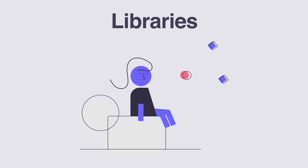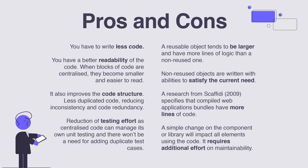Now that we have seen the most common techniques to reuse code, let's review the pros and cons. The main pros are: you have to write less code; you have better readability of your code because blocks of code are centralized, becoming smaller and easier to read; it also improves code structure, as less duplicated code reduces inconsistency and redundancy; and there is a reduction of testing efforts, as centralized code can be managed by its own unique testing with no need for duplicate test cases.